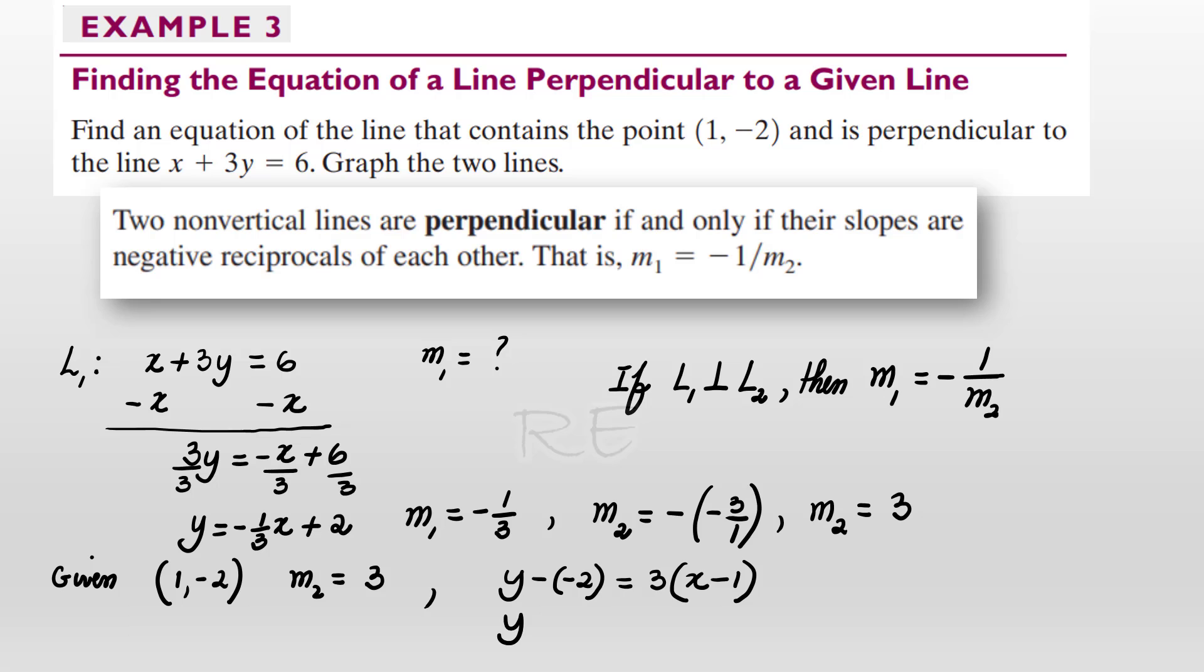Y plus 2 is equal to, when we distribute, 3X minus 3. When we subtract 2 from both sides, our final equation is Y is equal to 3X minus 5.